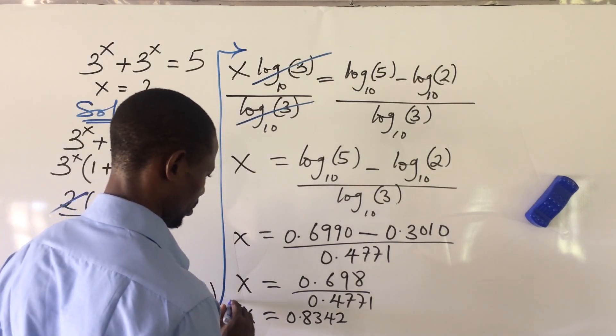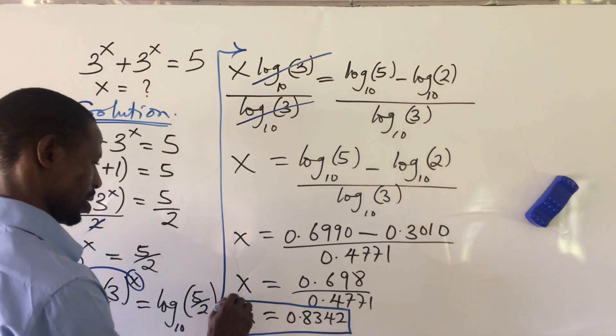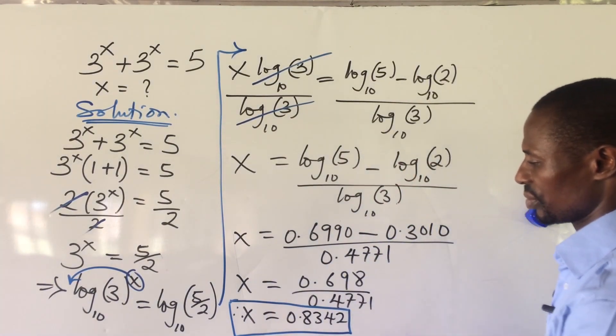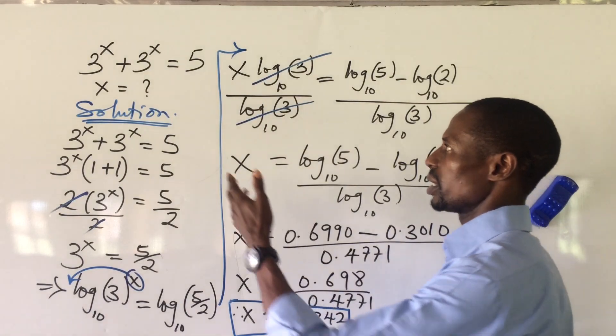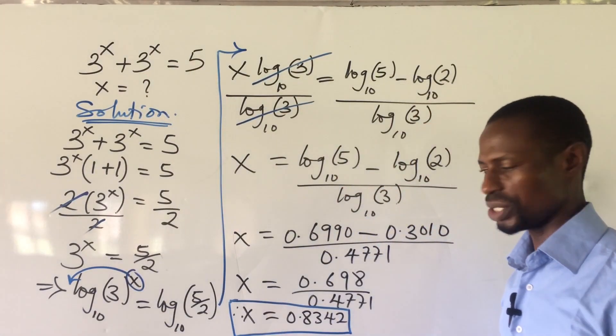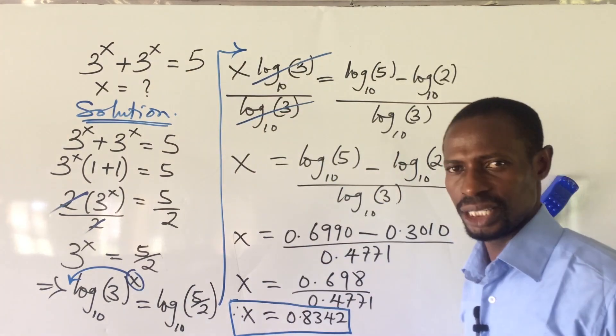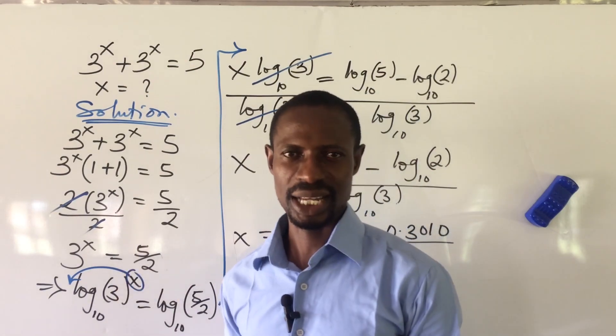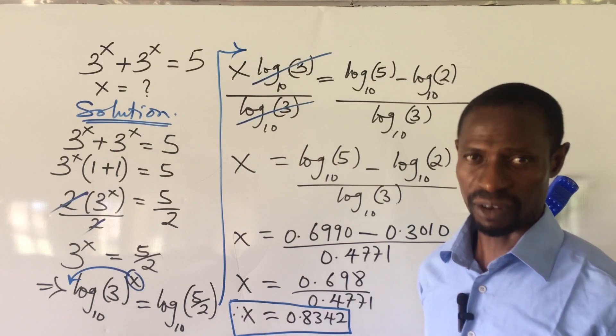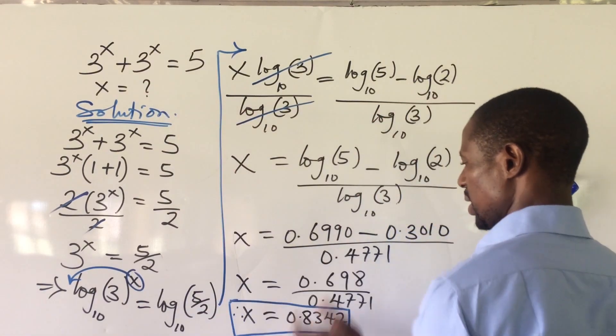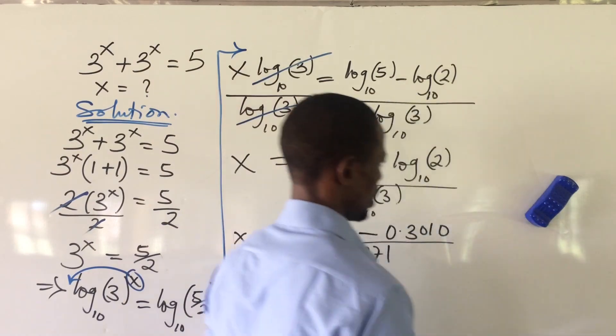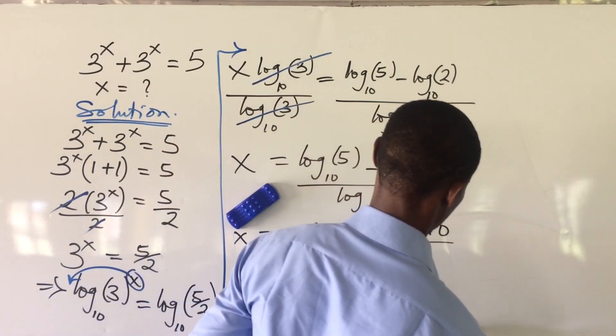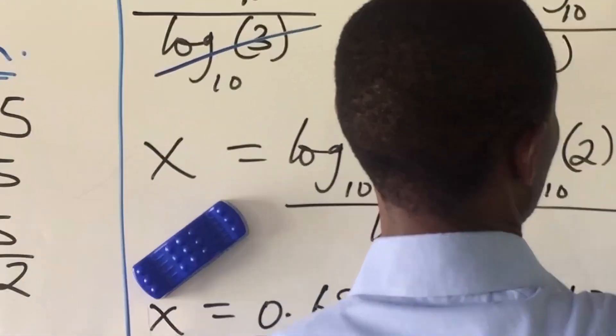So this is the value for our x. Now, but I want to check if the value for x will satisfy, correspond or give us the right solution to this exponential equation by substituting this answer into the initial equation. Because I've made it a point of duty to be checking all my answers in all my challenges these days for confirmation. So let's check if this answer will satisfy this equation. Let's check.